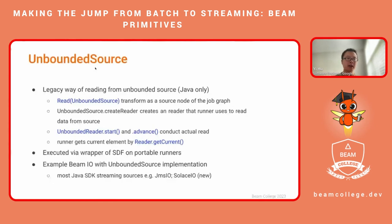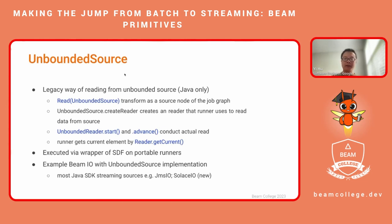Another way to read from an unbounded source is called unbounded source. In Beam Java, there are two types of sources: bounded source and unbounded source. This is the legacy way to read from unbounded source, and it's Java only — in Python we only have the Splittable DoFn API. I'm still talking about it because it's still heavily used. There is a new IO connector in the latest Beam — I think it's 2.57 — Solace IO, which reads from the Solace message system based on this unbounded source. Internally, unbounded source is executed by a Splittable DoFn wrapper, but before the Splittable DoFn existed, this was the way to read from unbounded source in Beam.